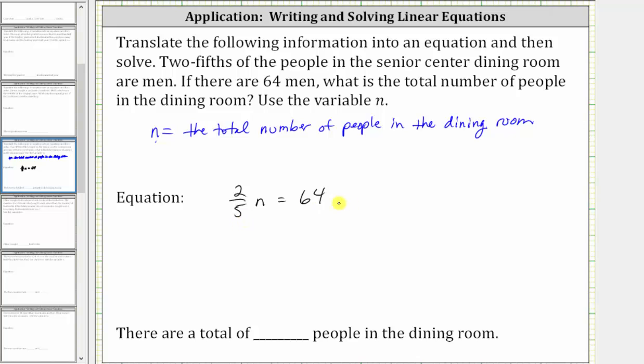And now if we solve the equation for n, we can determine the total number of people in the dining room. In order to solve for n, we need to isolate n on one side of the equation.